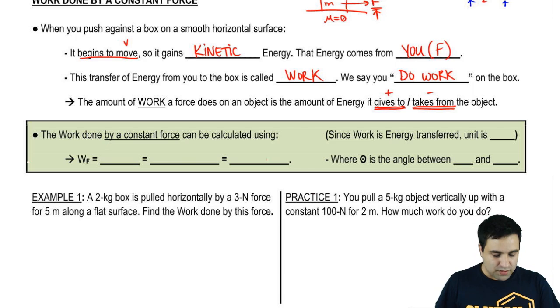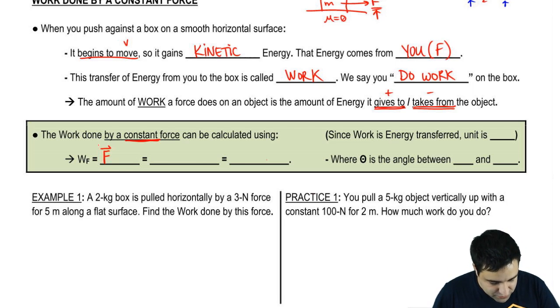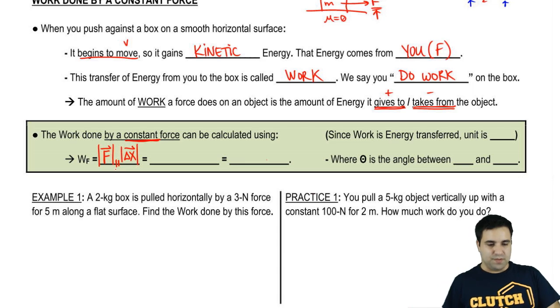To calculate work, the equation for the work done by a constant force, this only works for constant forces, can be calculated using this equation. I'm going to give you the fancy definition and then the useful one. So it's force, which is a vector, the magnitude of force times the magnitude of displacement, but these guys are supposed to be parallel to each other.